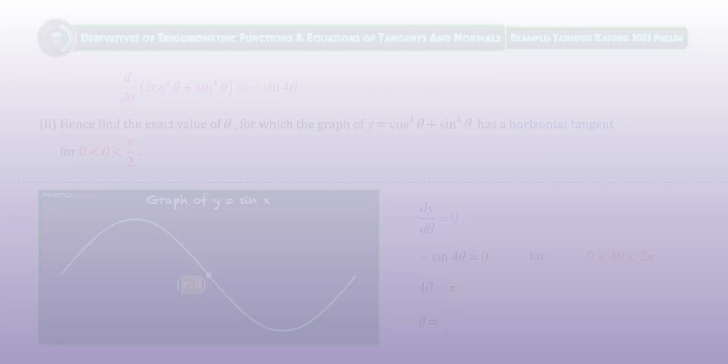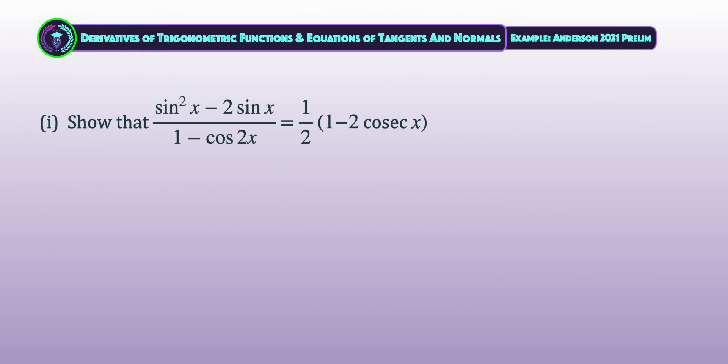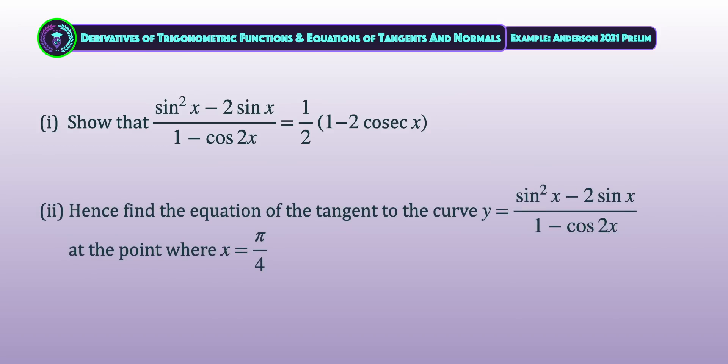Let's practice another similar question from Anderson Secondary 2021 preliminary examination. In part 1, show that (sin²x - 2sinx)/(1 - cos2x) is equal to (1/2)(1 - 2cosecx). Next, find the tangent equation to the curve where x = π/4. Pause to give it a try, and when you are ready, keep watching to learn how to solve this problem.